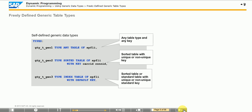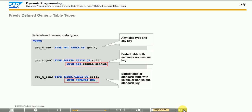The figure shows an example of locally defined generic table types. In these generic table types, you define the line type, but the table type and key definition remain open. To create appropriate generic types in the ABAP dictionary, check the corresponding options under access and key. Apart from the generic table types, there are no user-defined generic table types in ABAP.